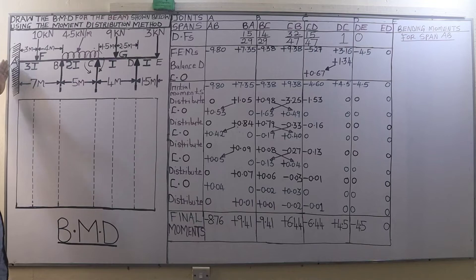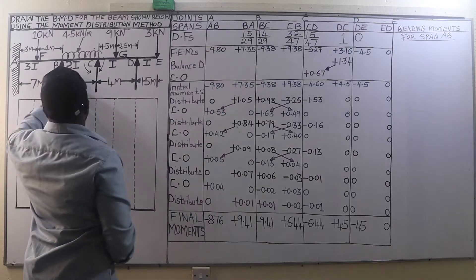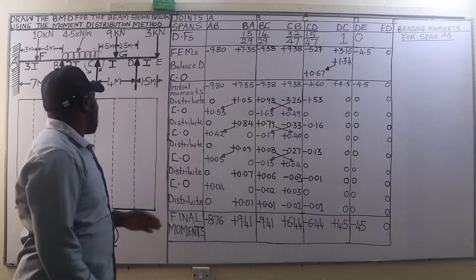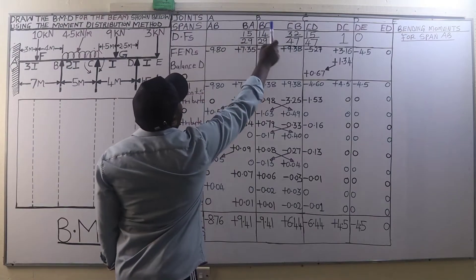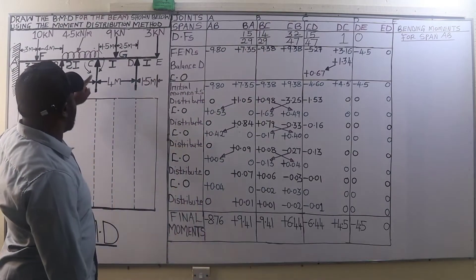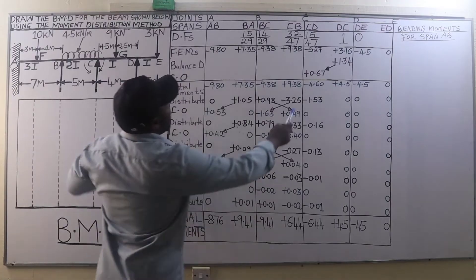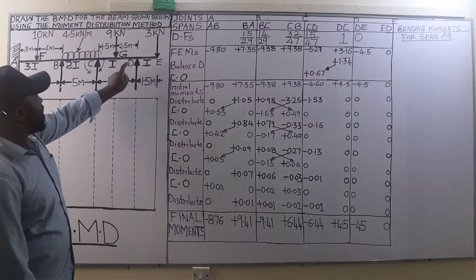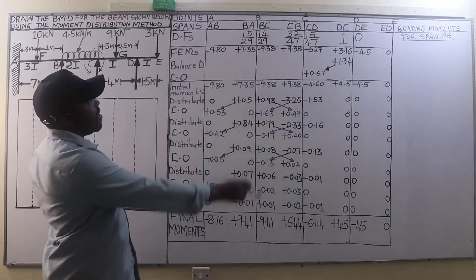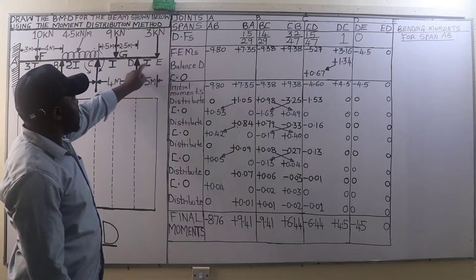On joint A, on the right-hand side, we have member AB (span AB). For joint B we have two members: BA and BC, both written there. On joint C we have members CB and CD, also written at joint C. At joint D we have members DC and DE, also written up there, and for joint E we have member ED.